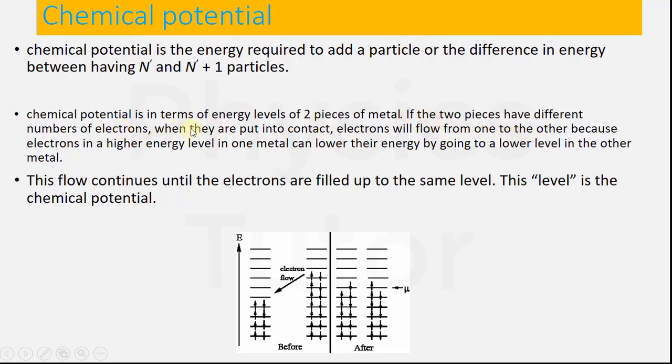If two pieces have different numbers of electrons, when they are put into contact, electrons will flow from one to the other because electrons in a higher energy level in one metal can lower their energy by going to a lower level in the other metal.